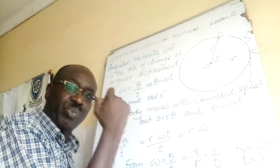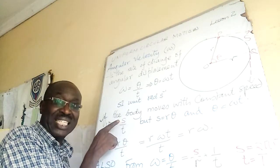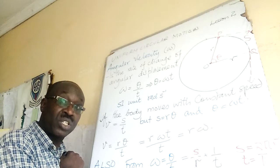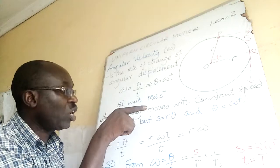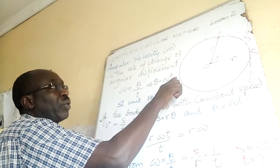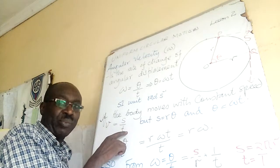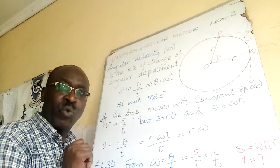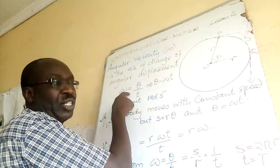Now if the body moves with constant speed, I write the formula for speed: speed equals distance over time. Note that S here stands for distance along the circumference, not speed. From lesson 1, we found that S equals R times theta, and theta from the angular velocity formula equals omega times t. So substituting: V equals S over t, which becomes R times theta over t.